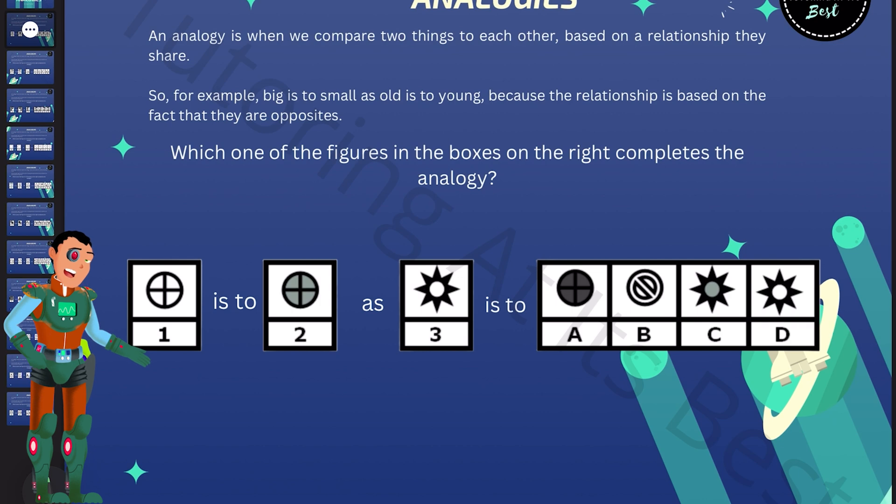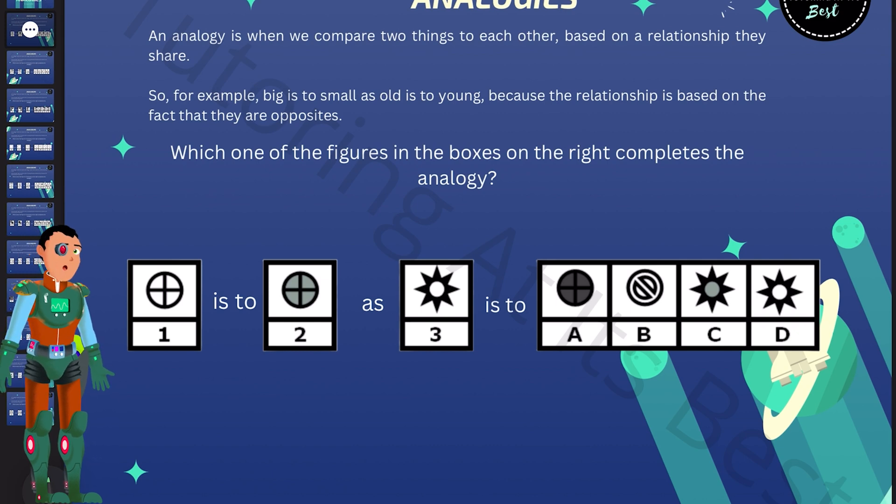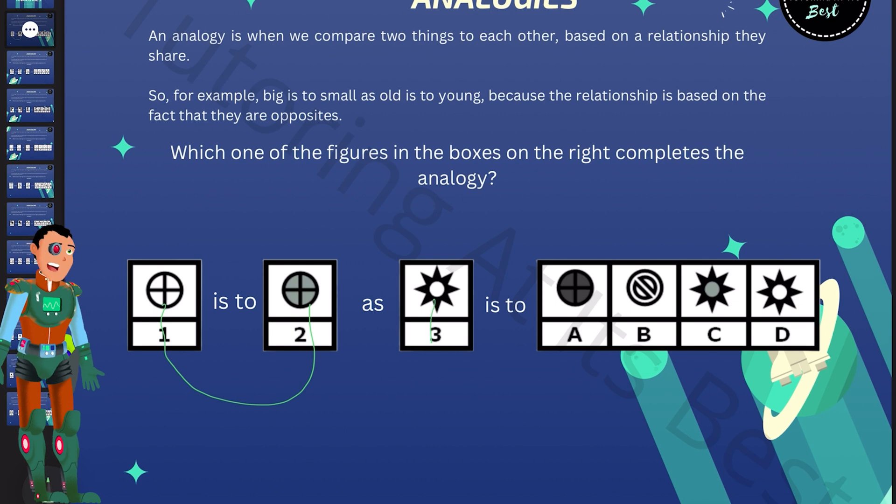So which one of the figures in the boxes on the right completes the analogy? We can see that the shape is not changing. So we're looking for a star. The only thing that is different is that the white center in the circle has been changed to gray. So we want a star that has been changed from white to gray. Another way to think about analogies is to say aloud what you see. So white circle is to gray circle as white star is to gray star. So with that being said, our answer would be C.